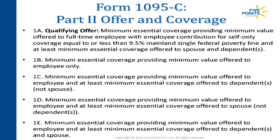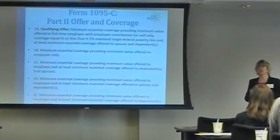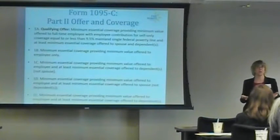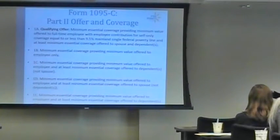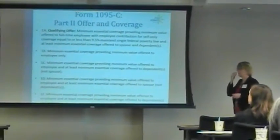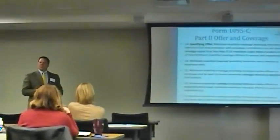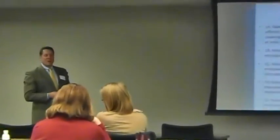1C is minimum essential coverage providing minimum value offered to the employee, and at least minimum essential coverage offered to dependents. You might set contributions to be affordable for employee-only, offer coverage to spouses and dependents but charge them more. If you carve out spouses altogether from your plan, you wouldn't be eligible to use 1A — you'd revert to 1C for probably the majority of one-series codes you end up using.